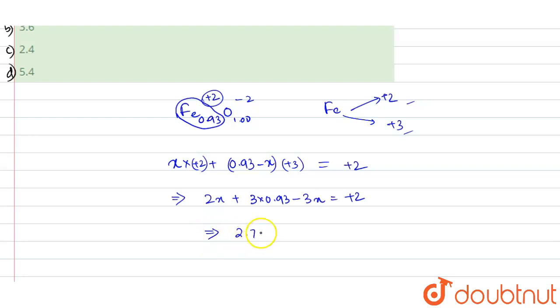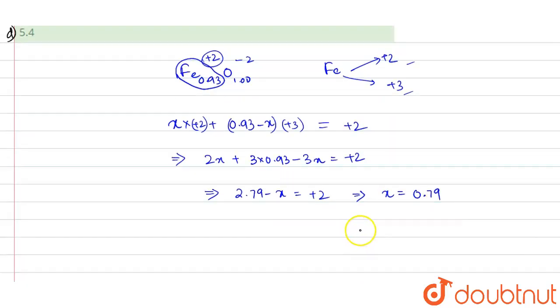And it gives 2.79 minus x is equal to plus 2, or it gives x is equal to 0.79. Now we can find the percentage. The percentage of Fe²⁺ is equal to 0.79 divided by the total number of Fe atoms.